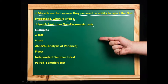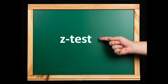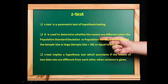Some examples of parametric tests are Z test, T test, ANOVA (analysis of variance), F test, independent sample T test, and paired sample T test. Z test is a parametric test of hypothesis testing used to determine whether the means are different when the population standard deviation or population variance is known, and when the sample size is greater than or equal to 30. Z test asserts the means of two data sets are different from each other when variance is known.